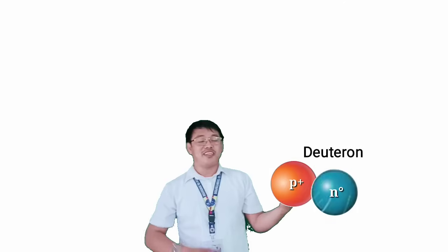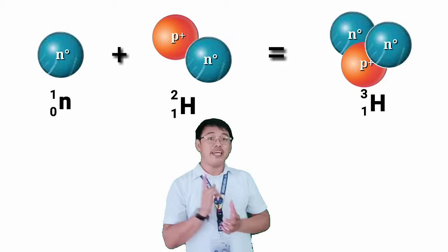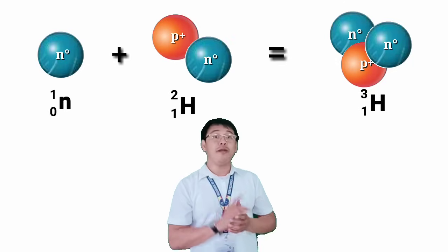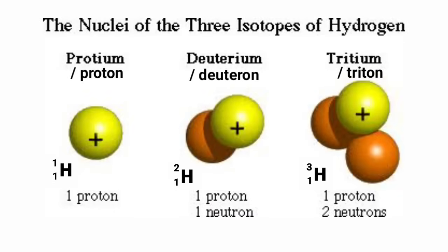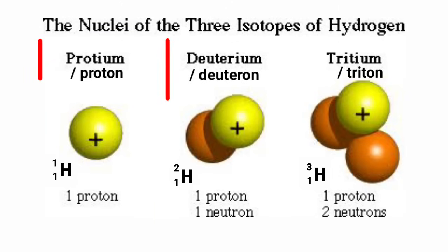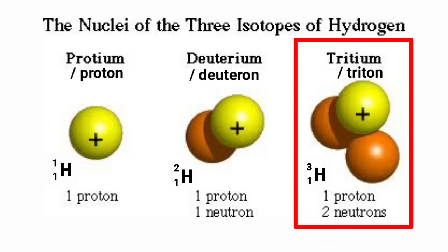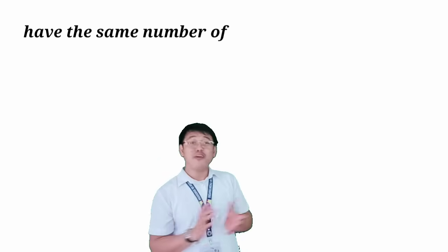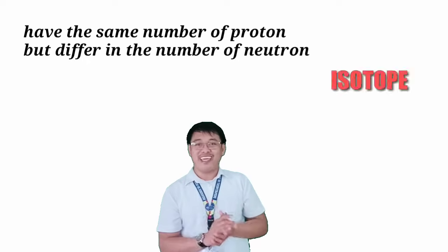When deuteron combines with one neutron, triton is formed. And this is still hydrogen since it has only one proton, regardless of the number of neutrons in it. As you can see, hydrogen has three isotopes. We have proton, since one proton can be regarded as the nucleus of a hydrogen atom. Deuteron with one proton and one neutron. Triton with one proton and two neutrons in the nucleus. They all have the same number of protons but differ in the number of neutrons and that is how we define an isotope.